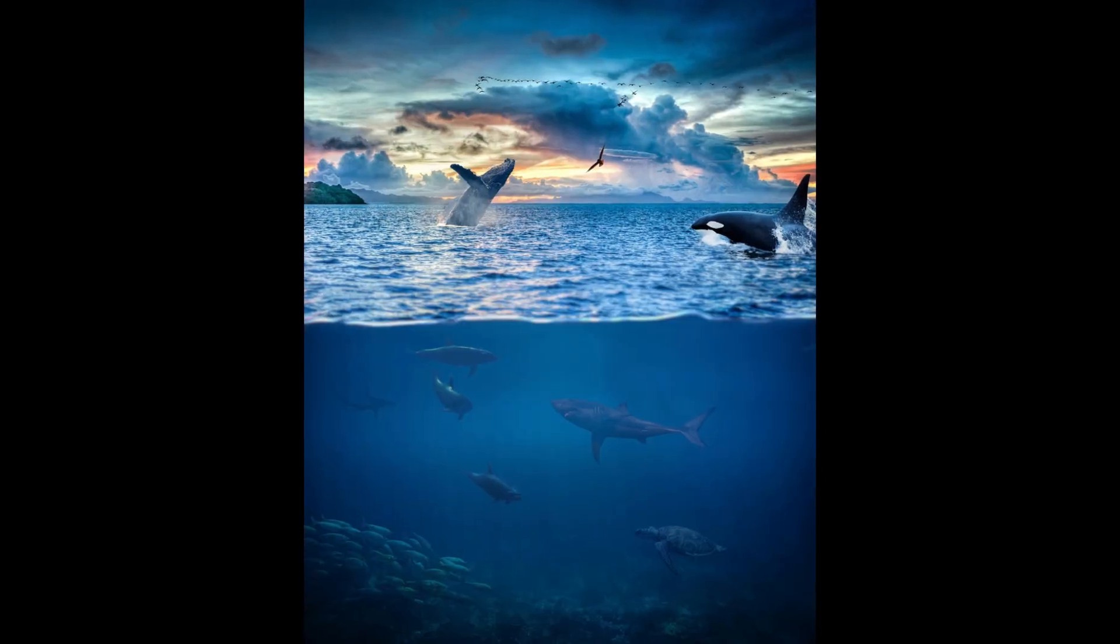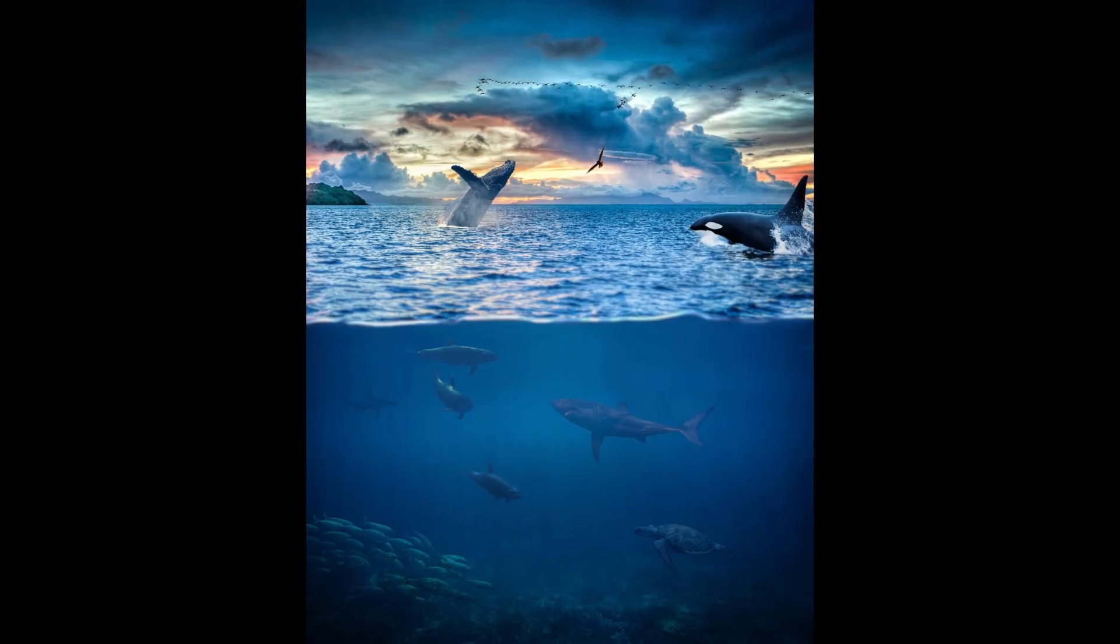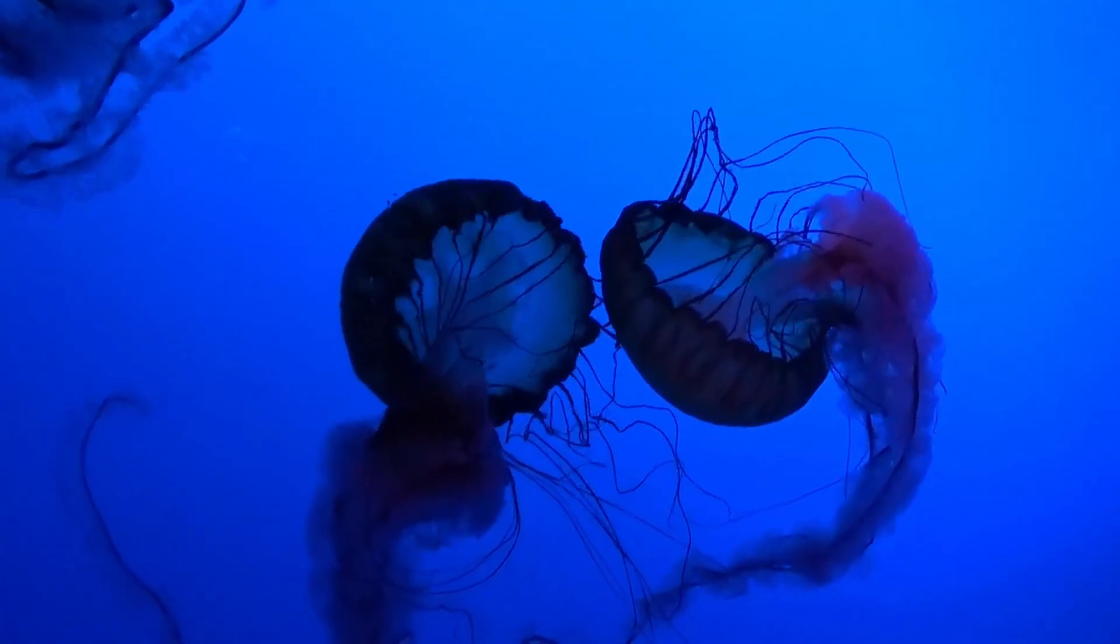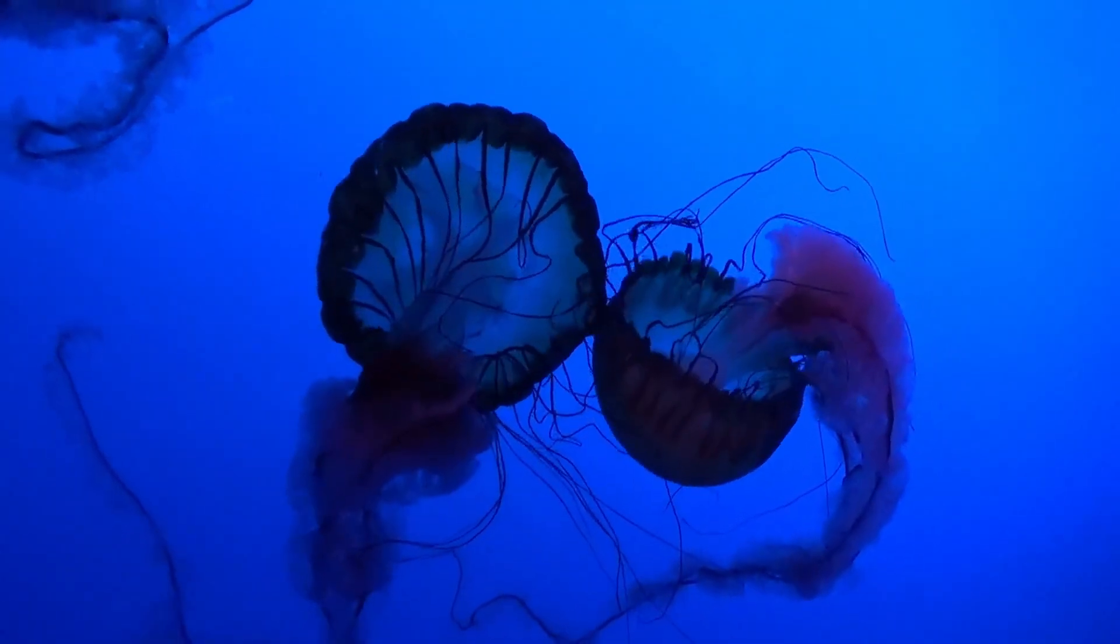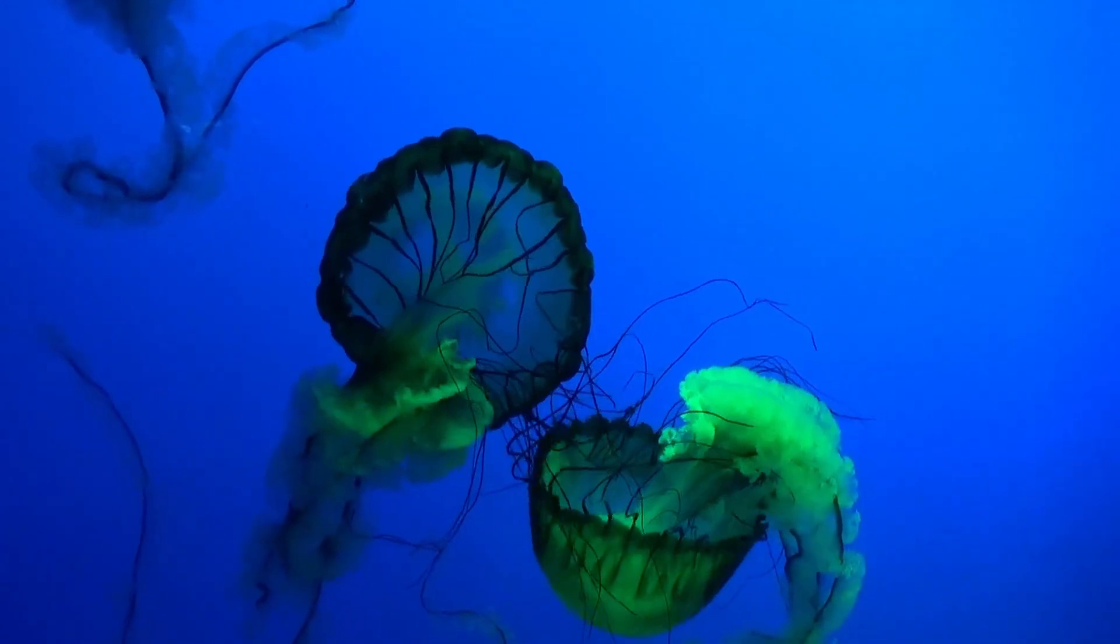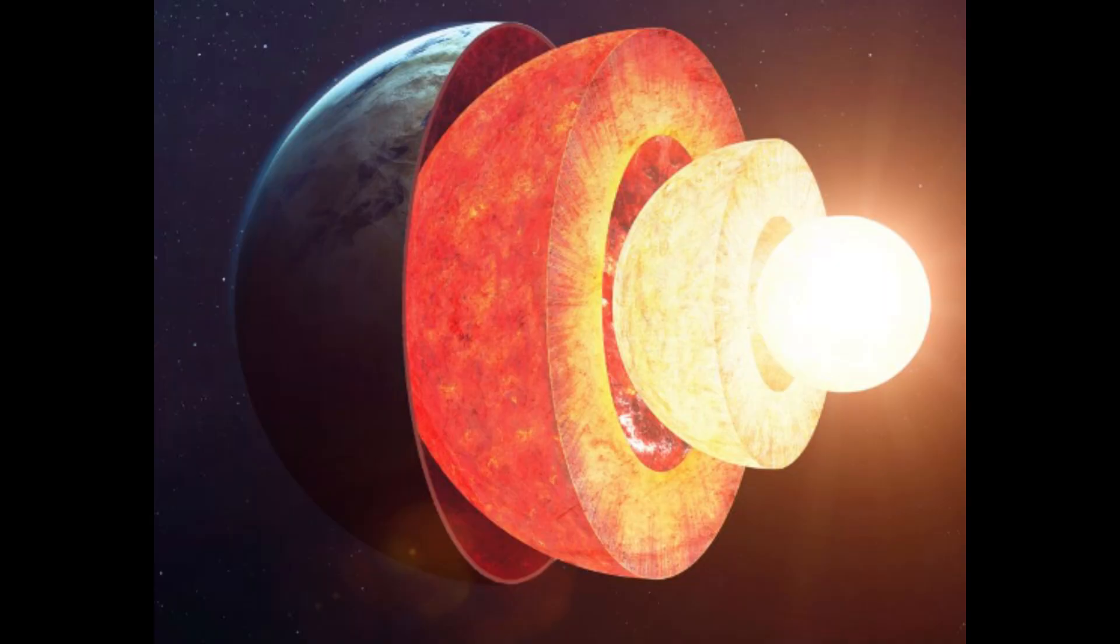And oceans filled with sea creatures like whales, dolphins, and jellyfish. Earth's many ecosystems are like different neighborhoods where every living thing has its own special place.